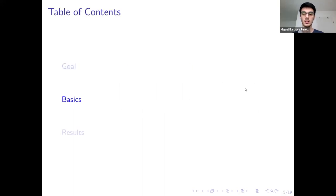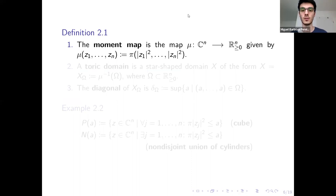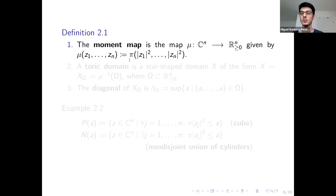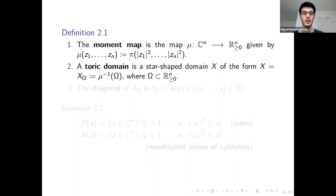Let's start with some basic definitions. The first is the moment map. This is the map mu from Cn onto the positive quadrant of Rn, given as follows: I take each z_i, take its absolute value, square it, and then multiply the resulting tuple by pi. With this, a toric domain is a star-shaped domain X of the form X equals X_omega, where omega is some subset of the positive quadrant of Rn, and X_omega is the pre-image of omega under mu.